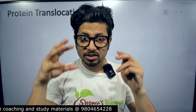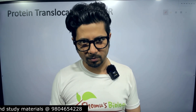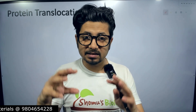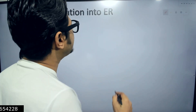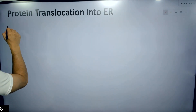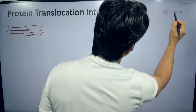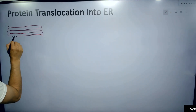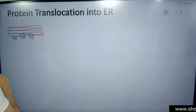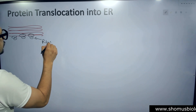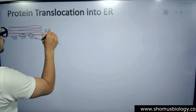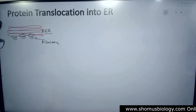But if a protein's final destination is to get out of the cell, it will always begin at the endoplasmic reticulum. In that case, the protein is synthesized by the ribosomes that are connected to the surface of the endoplasmic reticulum. We know that the endoplasmic reticulum has ribosomes on top of its membrane — two subunits of the ribosome — and we call this the rough endoplasmic reticulum.